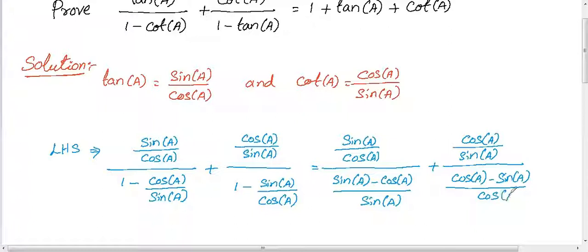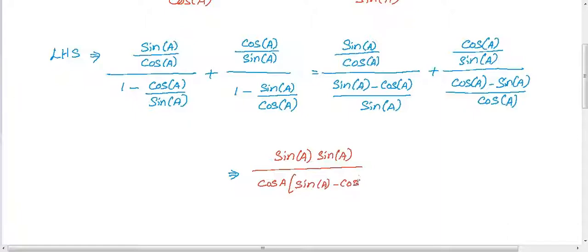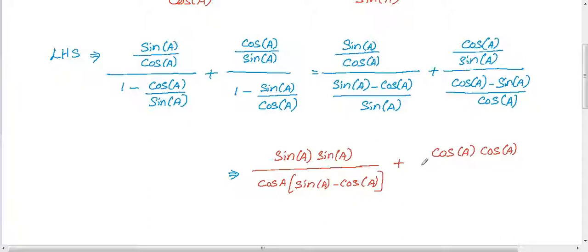Now I simplify the expression further. We have sin a in the denominator so it goes to the numerator. So we will get sin a times sin a divided by cos a times sin a minus cos a. And similarly in the second term, cos a goes to the numerator, so we get cos a times cos a divided by sin a times cos a minus sin a.